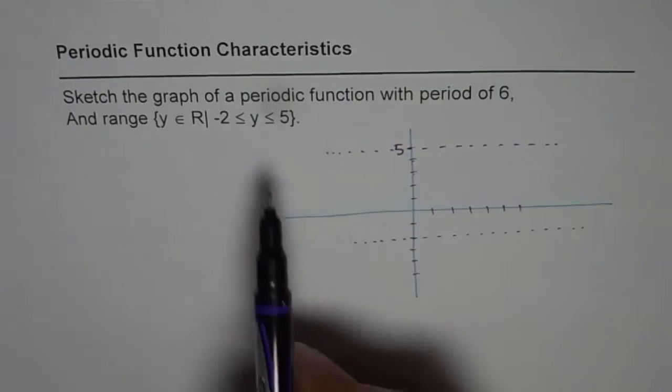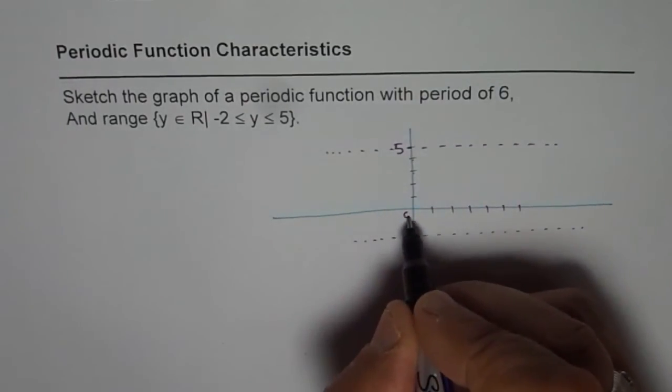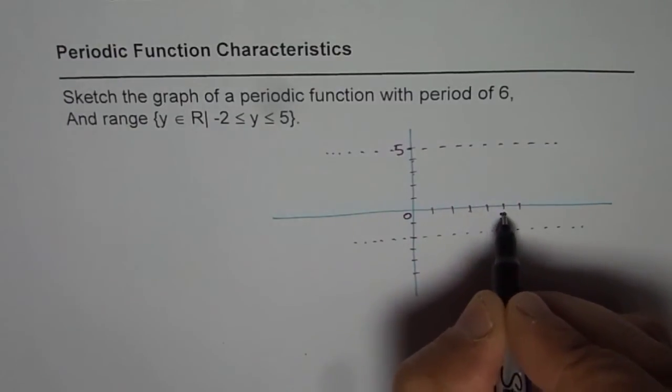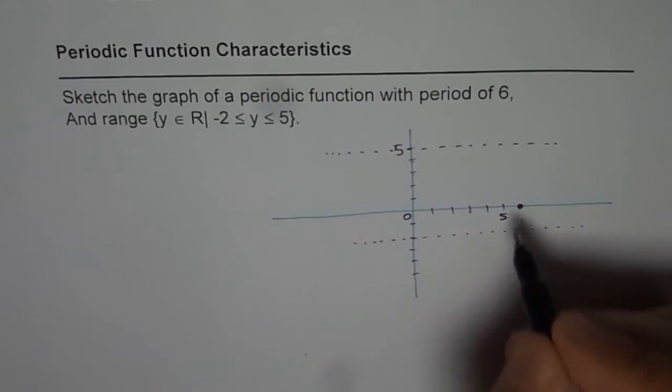Secondly we have a periodic function with period of 6. That means if this is 0, 1, 2, 3, 4, 5, this is 5 then 6. Whatever you draw has to repeat after this point. So one cycle should get completed within this time duration. That is the whole idea.